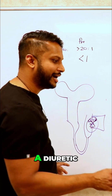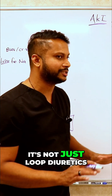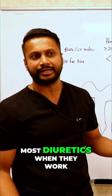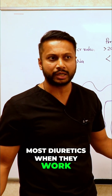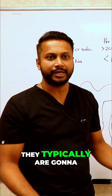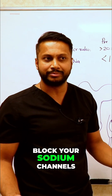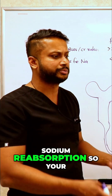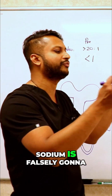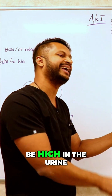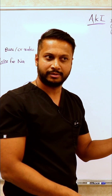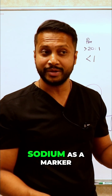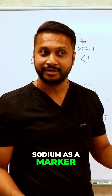So if somebody's on a diuretic — it's not just loop diuretics, even thiazide diuretics or most diuretics when they work — they typically gonna block your sodium channels. It's gonna impact your sodium reabsorption, so your sodium is falsely gonna be high in the urine. So can you use sodium as a marker? You cannot.